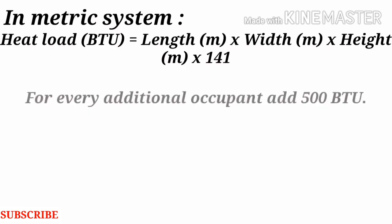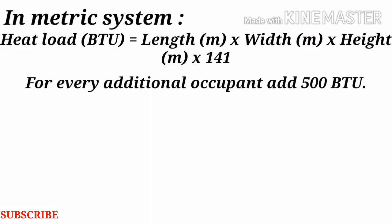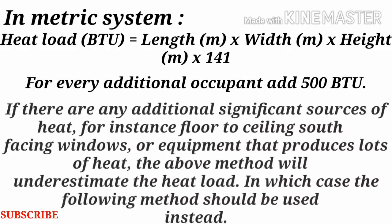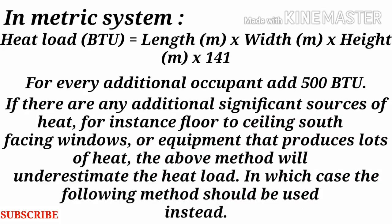For every additional occupant, add 500 BTU. If there are any additional significant sources of heat — for instance, floor-to-ceiling south-facing windows, or equipment that produces lots of heat — the above method will underestimate the heat load, in which case the following method should be used instead.